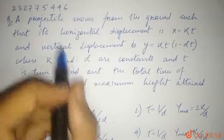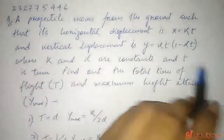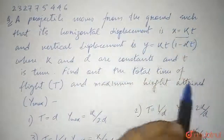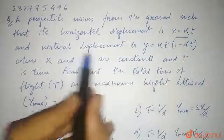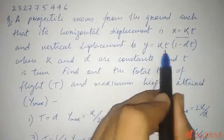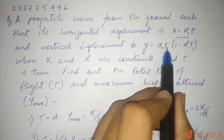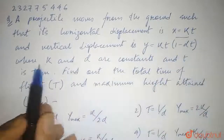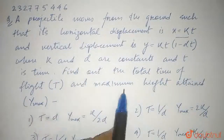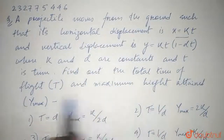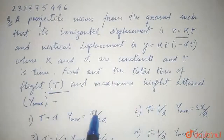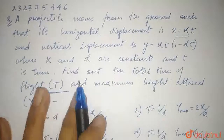So, we have been given this question. A projectile moves from the ground such that the horizontal displacement is x = kt and vertical displacement is y = kt(1 − αt), where k and α are constants and t is time. Find the total time of flight and maximum height attained, y_max.